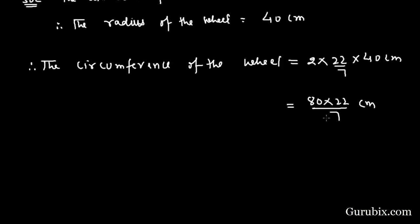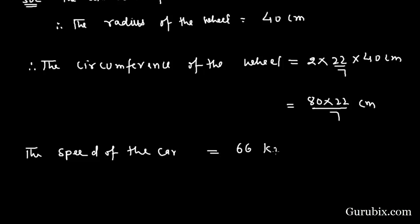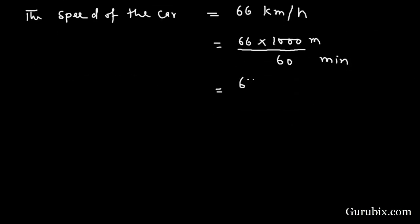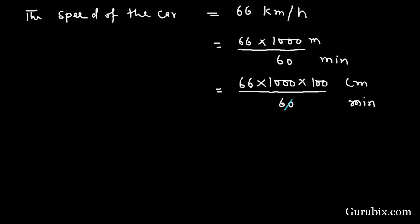The distance covered by the wheel in one round is equal to 80 times 22 over 7. The speed of the car is given as 66 km per hour, or 66 times 1000 meters over 60 minutes, or 66 times 100,000 cm over 60 minutes. Cancelling out, this equals 110,000 cm per minute. This is the speed of the car.